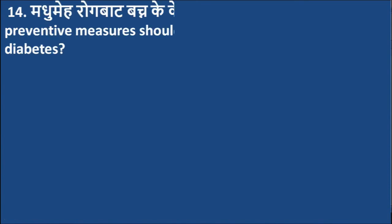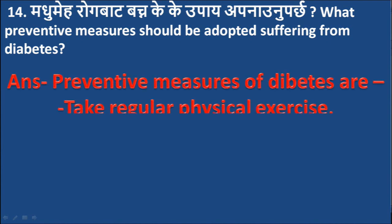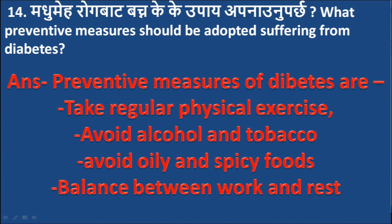Question 14: What preventive measures should be adopted to avoid suffering from diabetes? Answer: Preventive measures for diabetes include taking regular physical exercise, avoiding alcohol and tobacco, avoiding oily and spicy foods, and maintaining a balance between work and rest.